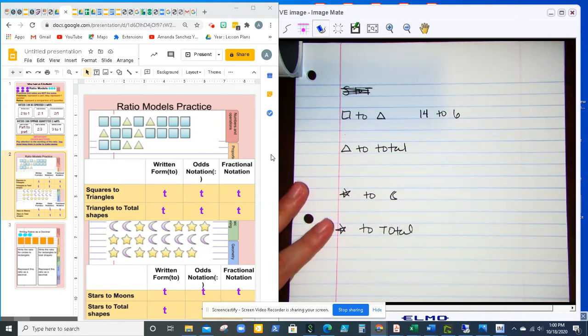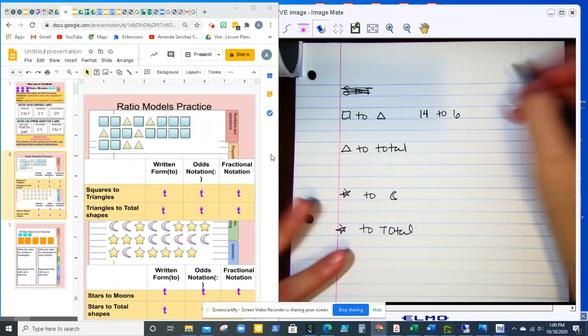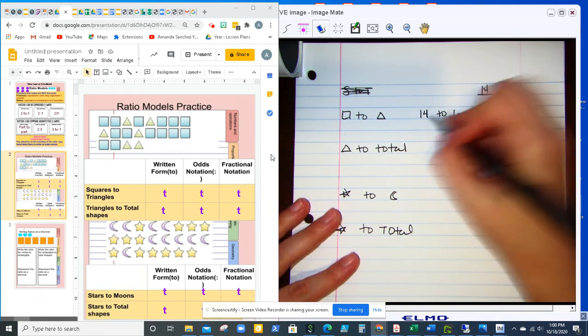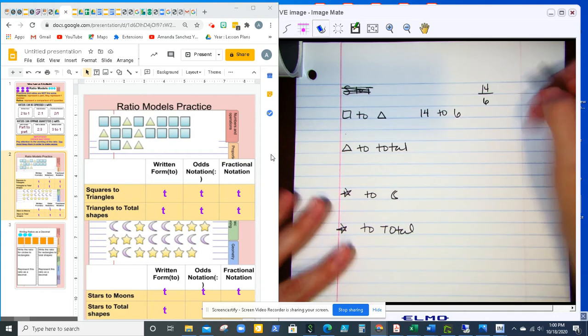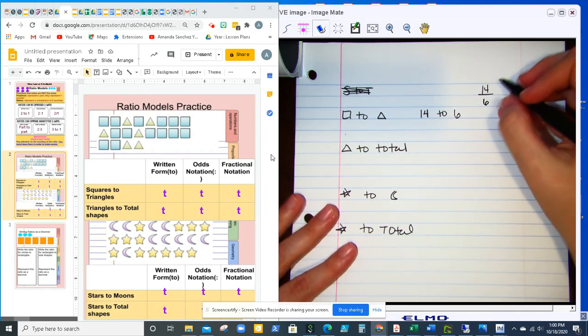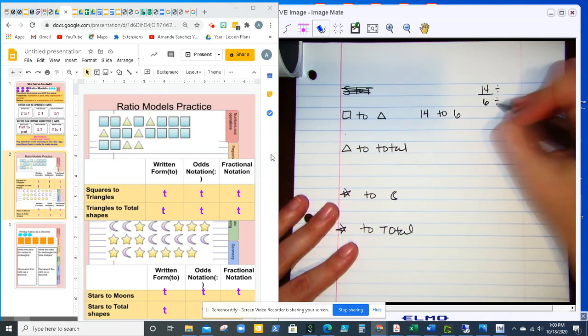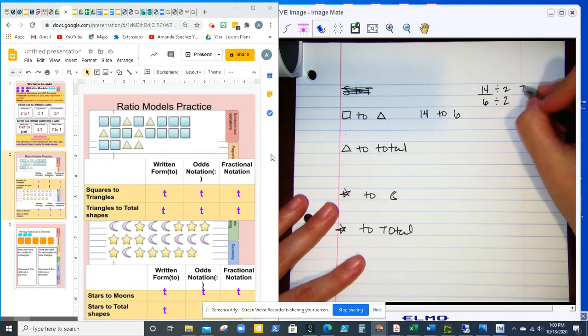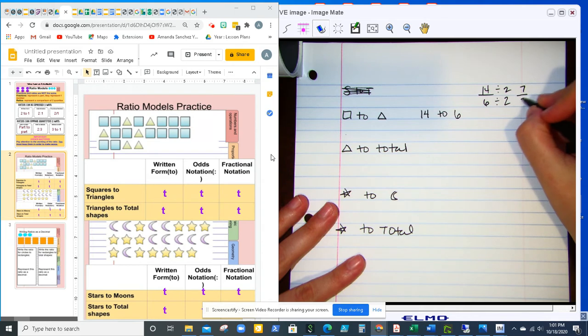And we're going to also simplify this so it's in simplified form. So I'm going to write it as a fraction. You always leave whatever number comes first as your numerator, don't switch it around, and then let's simplify it as low as we can. So I know they're both even, so I'm going to divide by 2. So 2 can go into 14 seven times, and 2 can go into 6 three times.